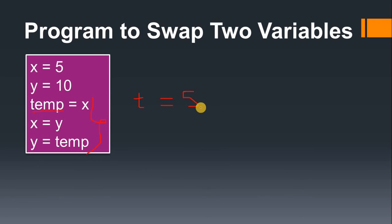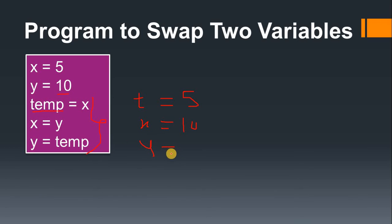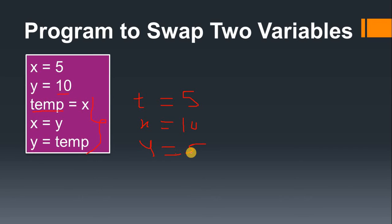When we write x equal to y, y's value is 10, so x becomes 10. The next statement is y equal to temp, and the value of temp is 5. So when you print, you get x as 10 and y as 5. Previously x was 5 and y was 10 — by using this logic we interchange the values between the two variables.